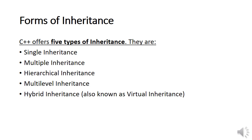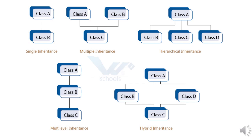There are mainly five forms or types of inheritance: single inheritance, multiple inheritance, hierarchical inheritance, multi-level inheritance, and hybrid inheritance (also called virtual inheritance). In single inheritance, a class B is derived from a single class A — a class derived from a single base class is called single inheritance.